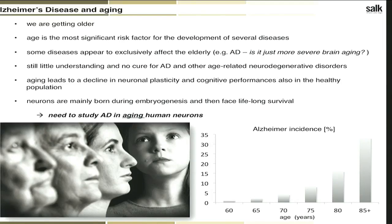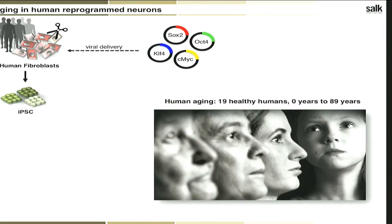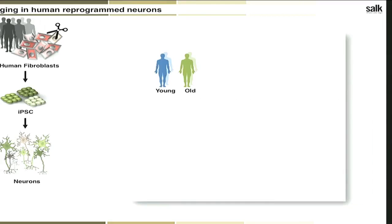To study AD, we want to study aging human neurons. We looked at a cohort of 90 healthy human individuals ranging from newborns up to 89 years of age, obtained fibroblasts, reprogrammed these cells back into iPSCs using the four Yamanaka factors, and generated neurons — to compare differences between neurons generated from young versus old healthy people. We started with an unbiased RNA-seq approach, comparing young against old-derived human fibroblasts, and found many genes significantly differentially expressed with aging.